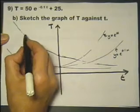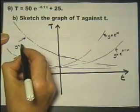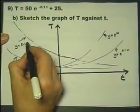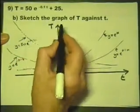A lot steeper. But this is just a sketch. So that is going to be the graph of Y equals 50 of E to the minus 0.1 of X.